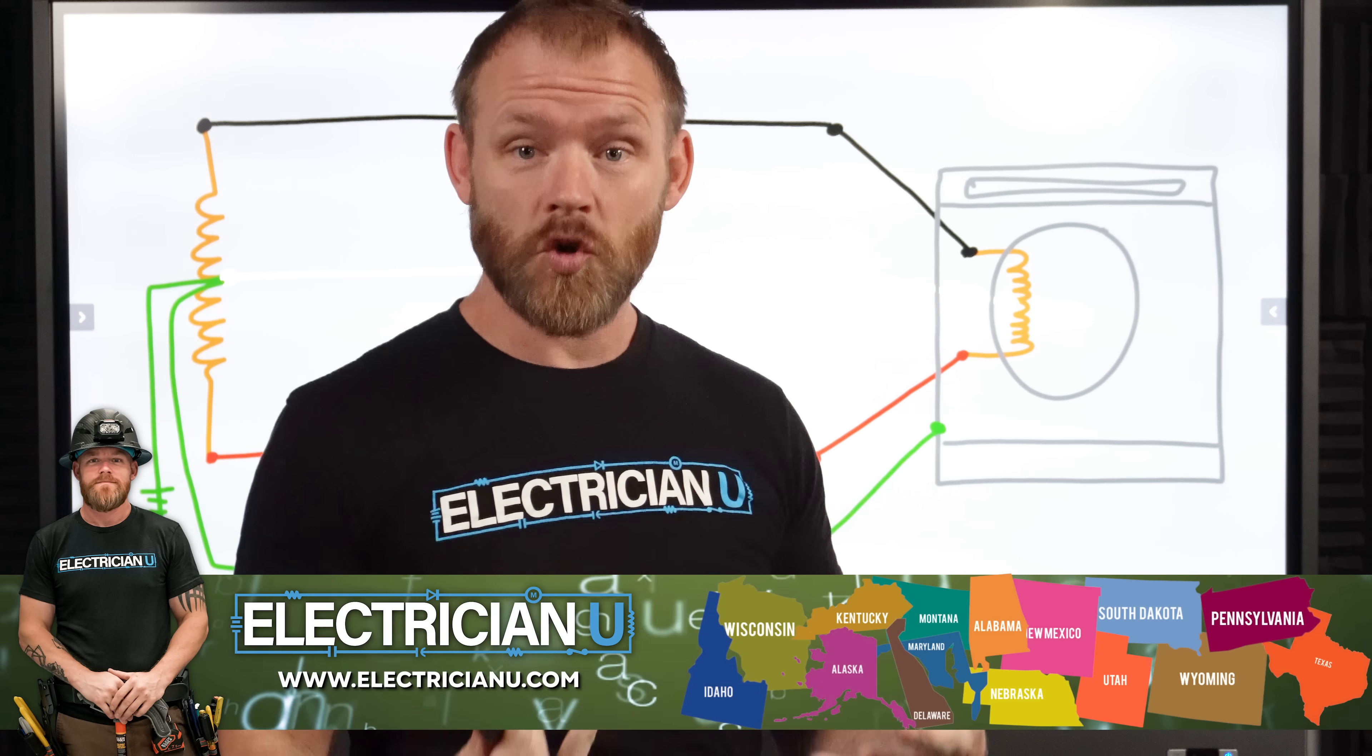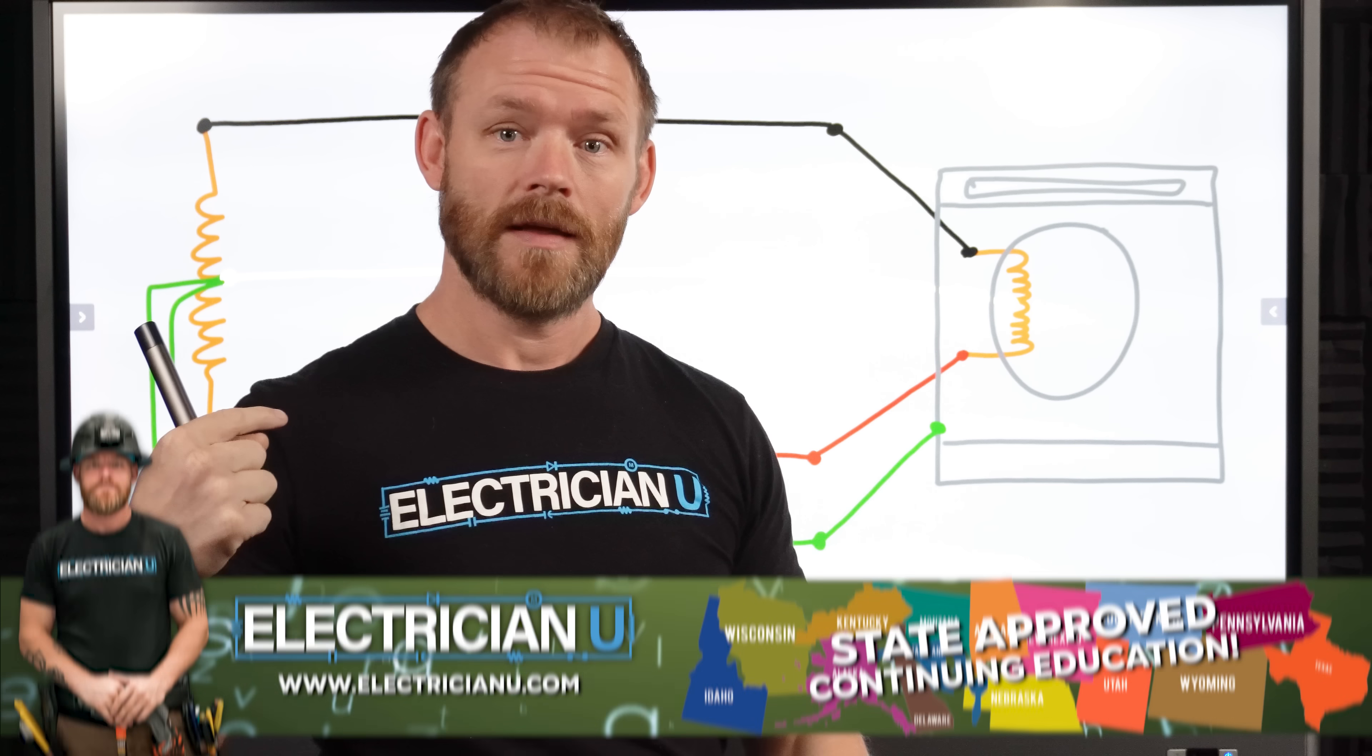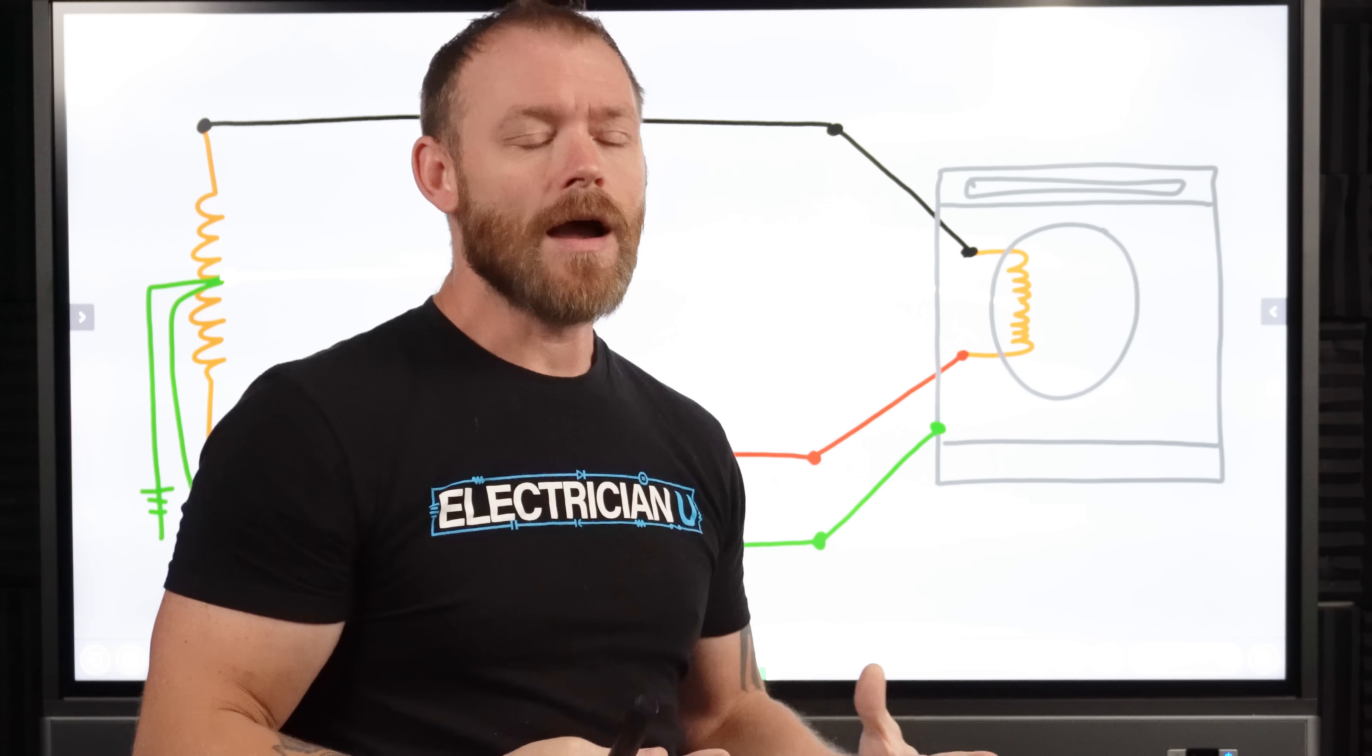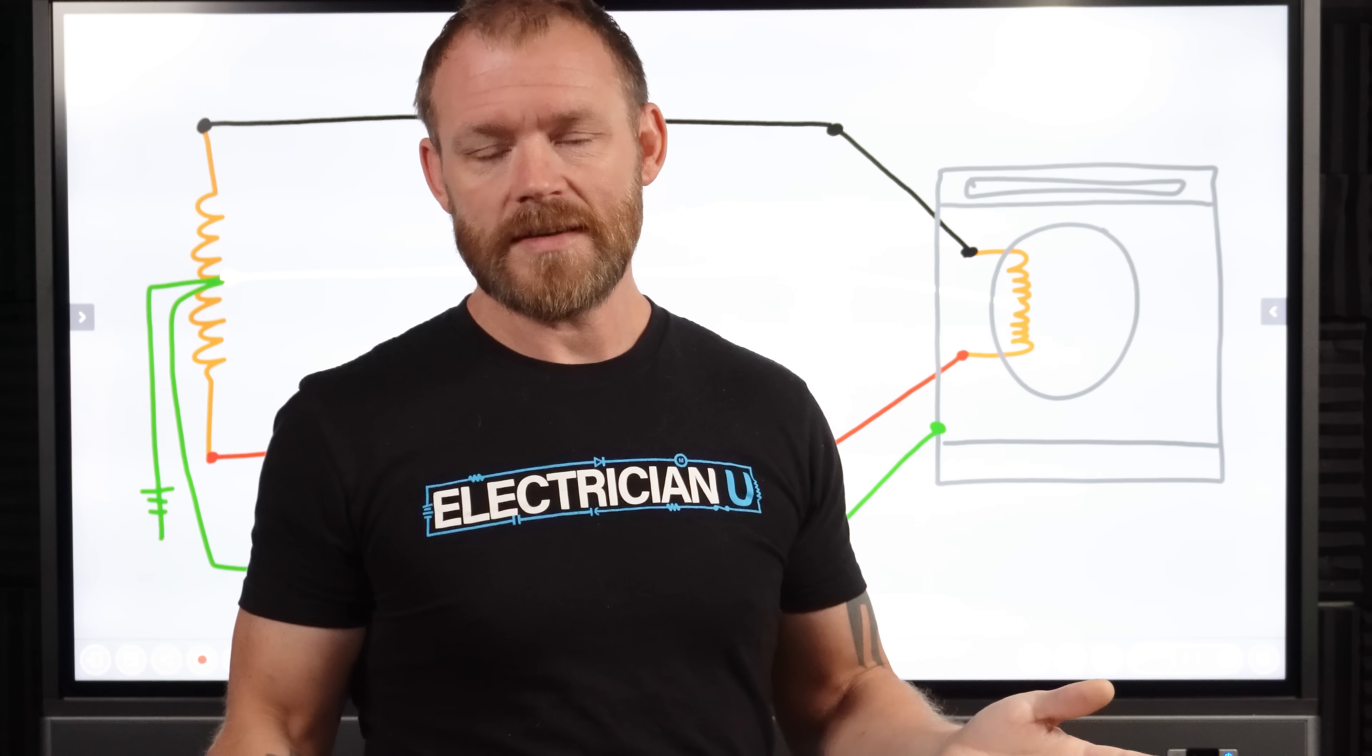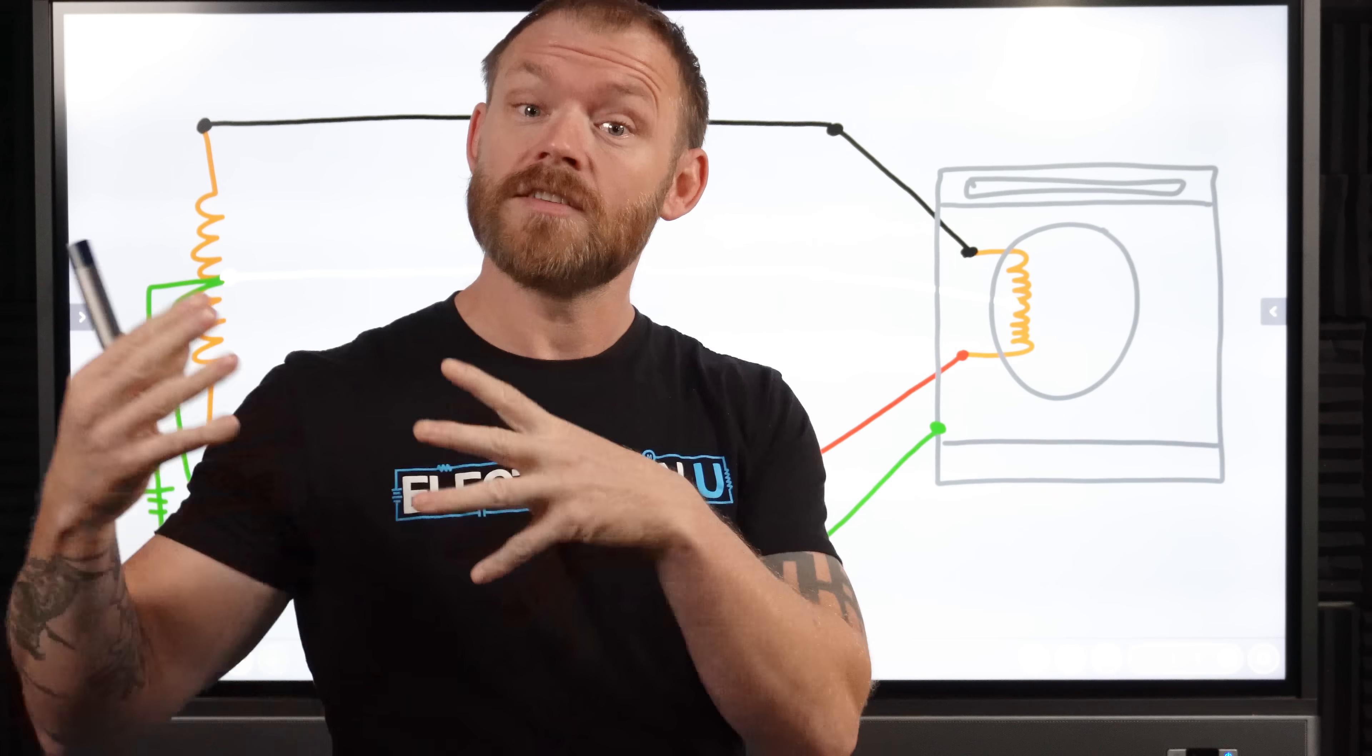So when we say a short circuit, what we mean is that there's a shortcut in the circuit. The power is not coming from the source going through the load like it's supposed to and getting back to the source. It's somehow found a shortcut or a short before the load. So that is a short circuit.